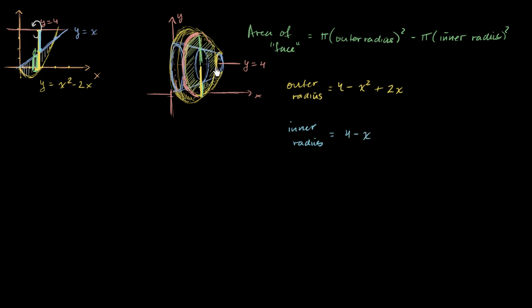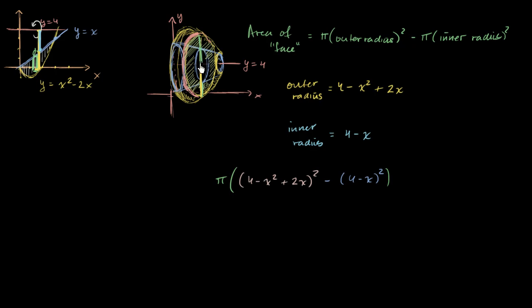So the area of the face of one of these washers for a given x is pi times the outer radius squared — that's (4 minus x squared plus 2x) squared — minus the inner radius squared, which is (4 minus x) squared. To get the volume of one washer we multiply by the depth dx, and to find the total volume we sum up all these washers, taking the limit as dx approaches 0.